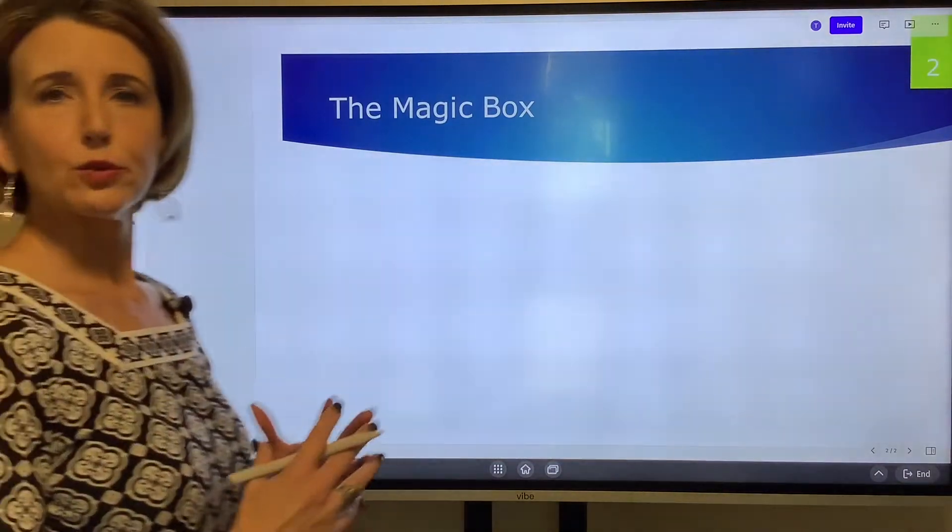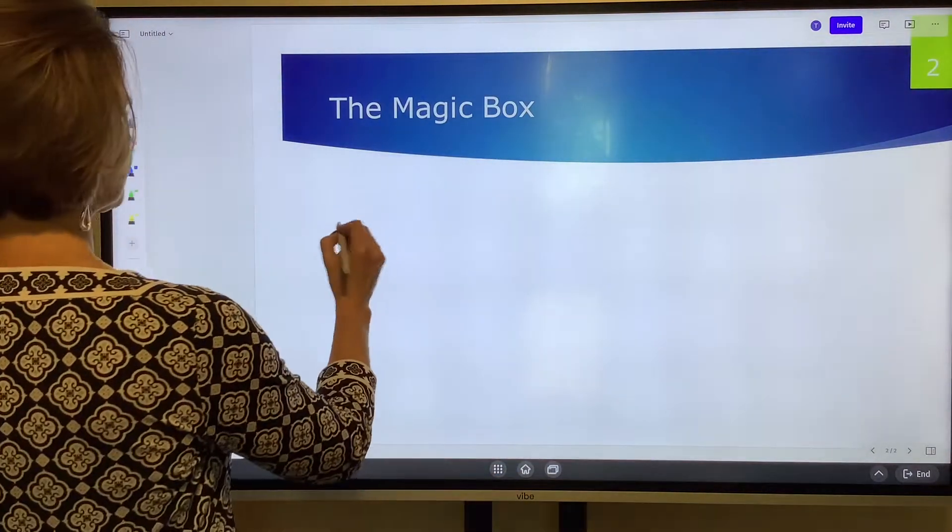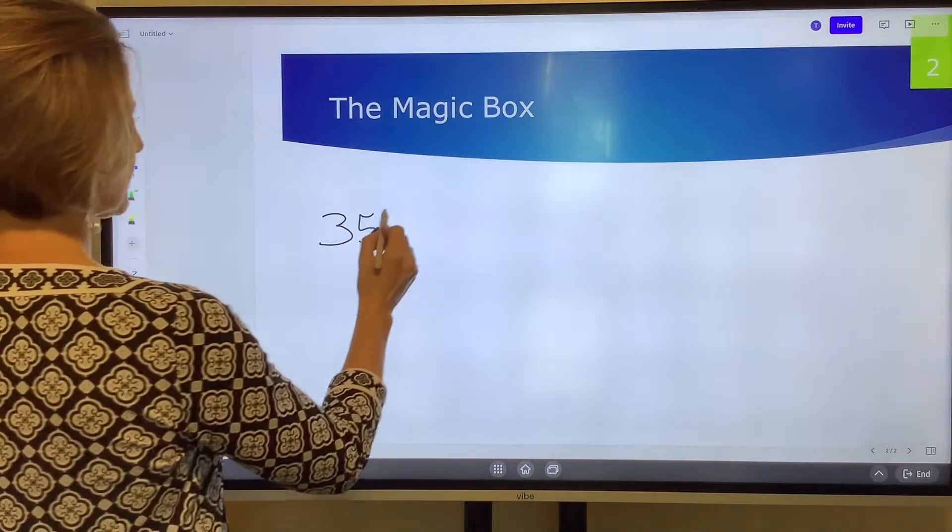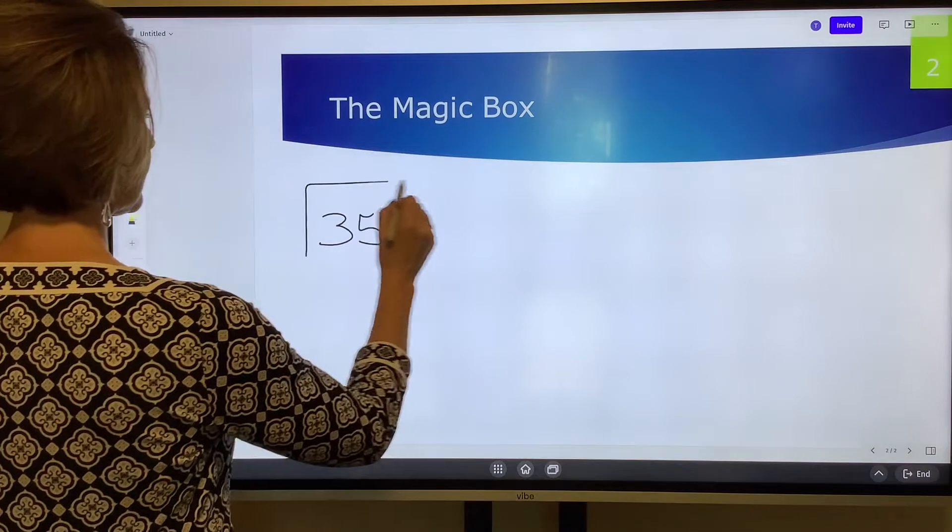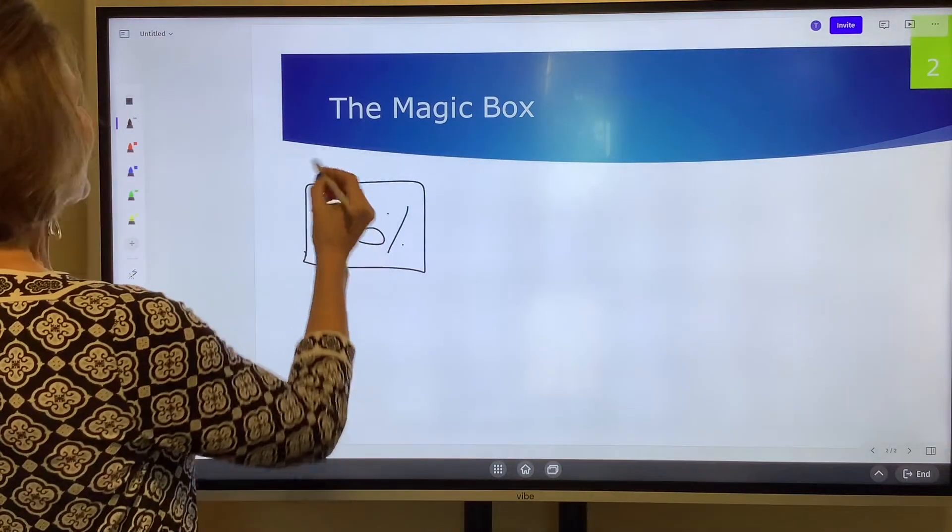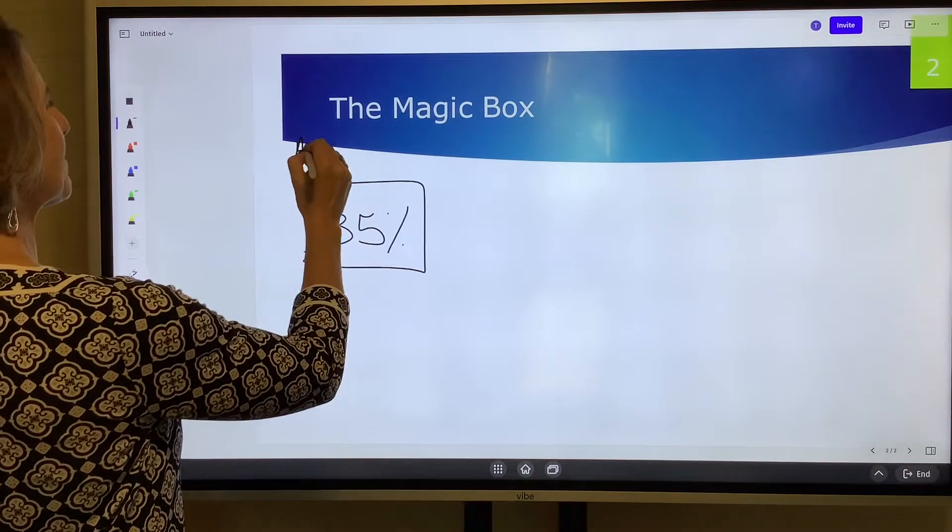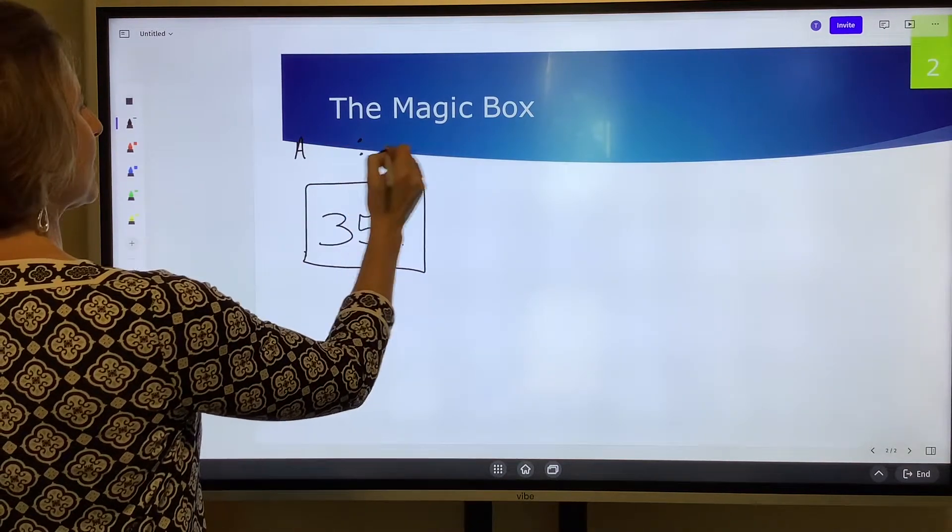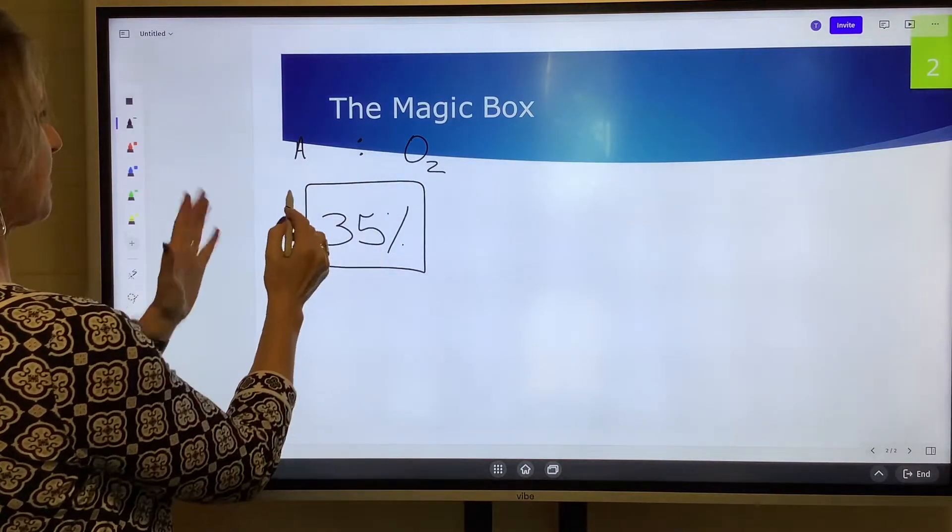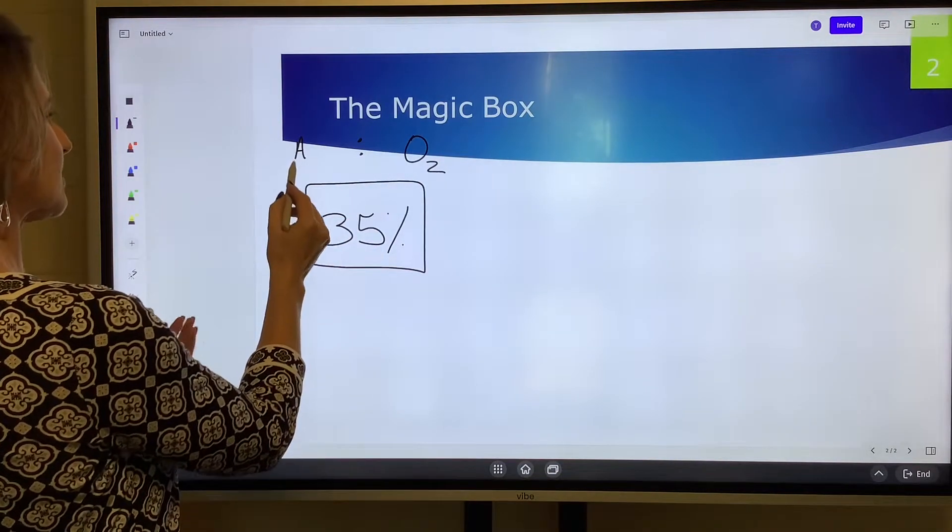Let's work an example. Let's do 35 percent. The FiO2 goes in a box—just put it in a box, that's why it's called the magic box—and what we're wanting to do is to come up with an air to oxygen ratio.